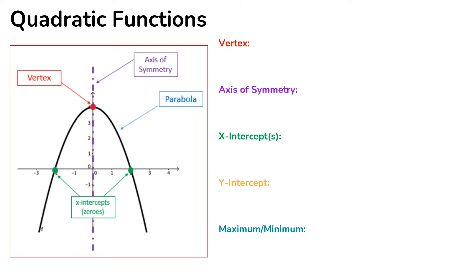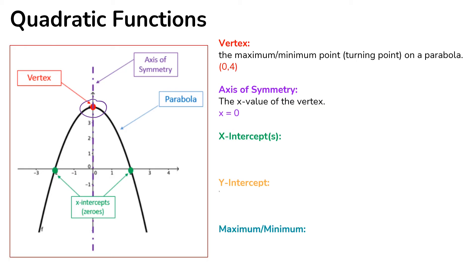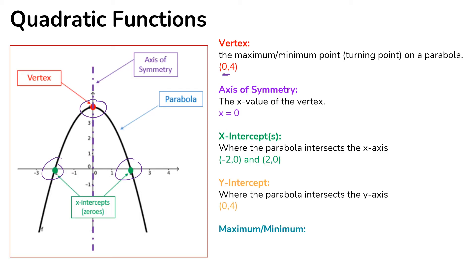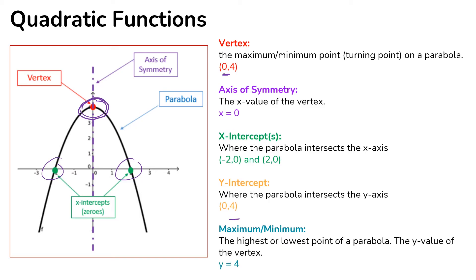Next we're taking a look at quadratic functions. The vertex is the maximum or minimum — the turning point on the parabola. The axis of symmetry is x equals zero, which is the x-value of the vertex and cuts the graph into two equal halves. The x-intercepts, where the graph crosses the x-axis, are at (−2, 0) and (2, 0). The y-intercept is at (0, 4). Since the graph opens downward, it has a maximum at y = 4.